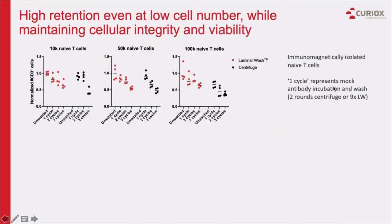There is an increasing drive to miniaturize assays and increase workflow throughput. Our customers in gene editing and single-cell genomics fields requested information on washing low numbers of cells. We isolated naive T cells, then aliquoted the cells to 10,000, 50,000, or 100,000 cells per sample. The cells were subjected to one, two, or three rounds of incubation and wash, consisting of simulated antibody staining, then washed either two rounds in centrifuge or nine rounds on laminar wash. Laminar wash maintained a high rate of cell retention relative to initial cell count throughout the different starting cell numbers. In contrast, samples processed with centrifuge wash had less than half of the initial cell numbers by the end of the third incubation and wash.